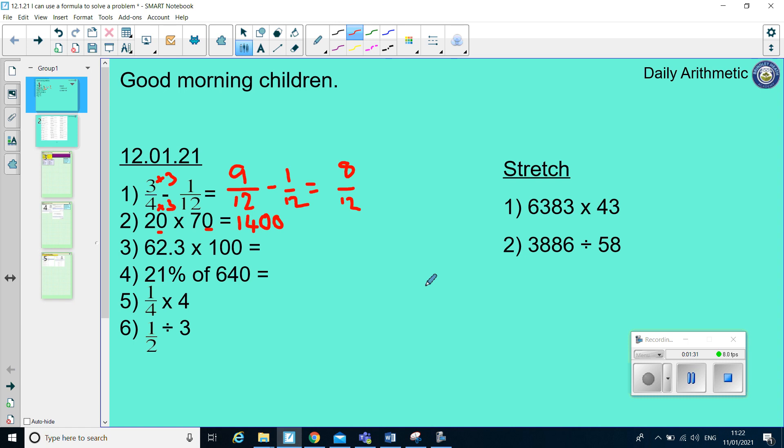Question 3, we're multiplying by 100, so we need to move the digits two places to the left. So, if I've got 62.3, if I move my 6 one place, it ends up in the hundreds column, but if I move it two places, it ends up in the thousands column. So, my answer is 6,230.